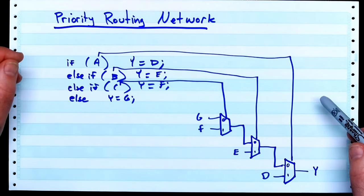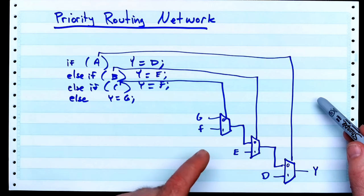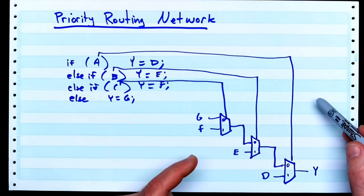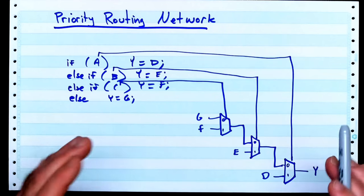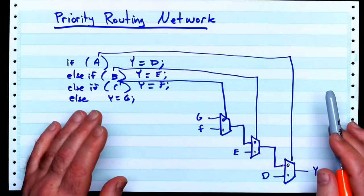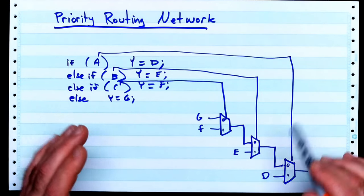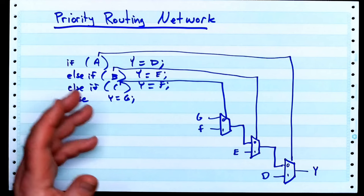And it tells you. Usually it's some carry chain in one of your adders or something, assuming you have adders. But it could also be a propagation through a routing network like this. And that's why we need to understand this.